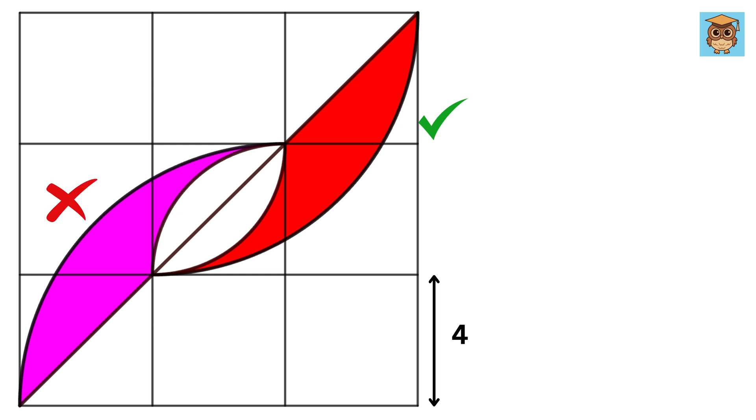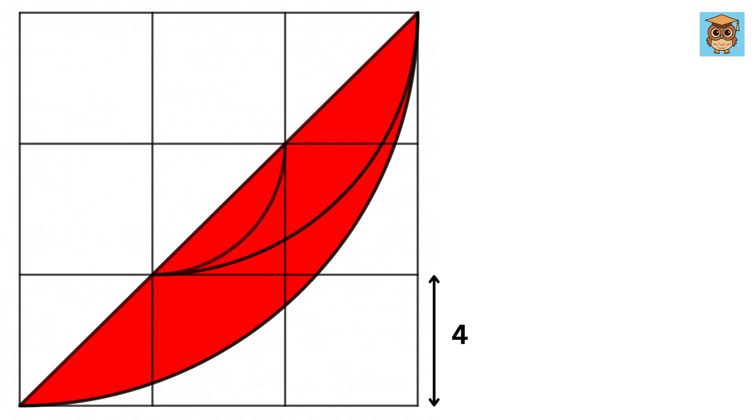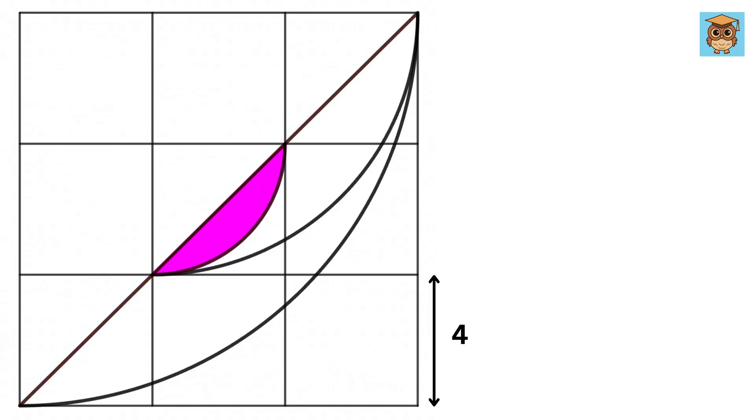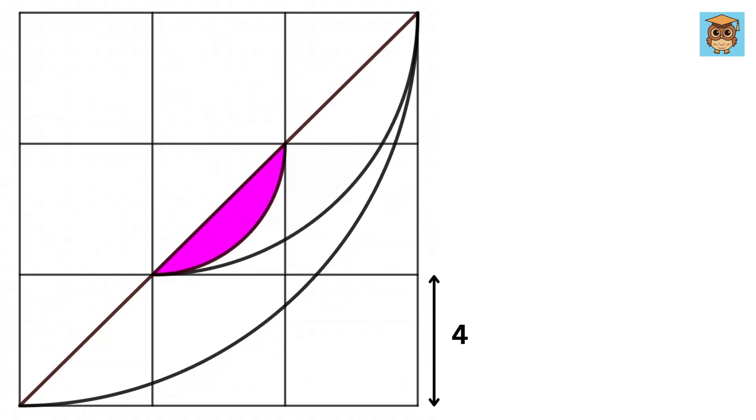Therefore, we will keep this and remove this one. We are now supposed to find this one. This will be equal to one segment of the circle minus the other circle's segment. In other words, the red shaded region will be equal to this segment minus this segment.